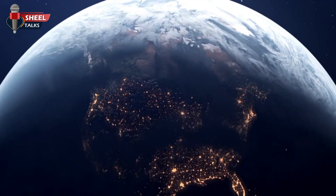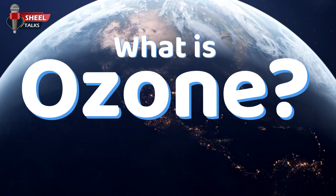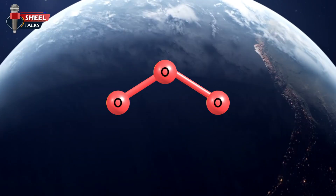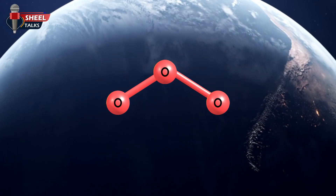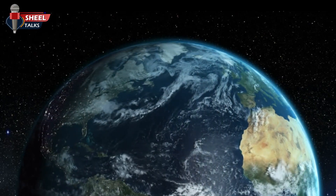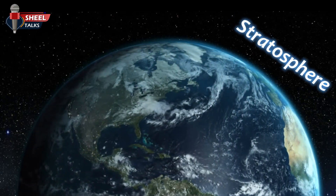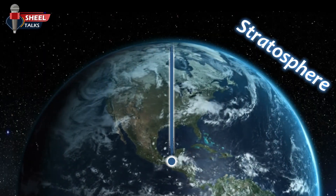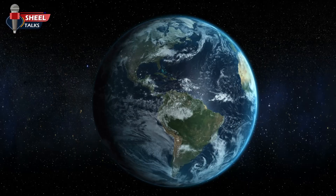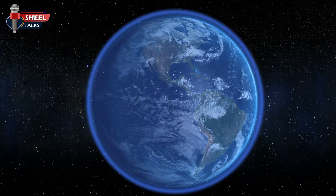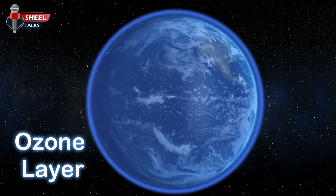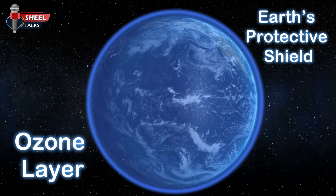First, let us talk about what ozone actually is. Ozone is a gas made up of 3 atoms of oxygen, and its chemical formula is O3. This gas is found in the stratosphere of the earth's atmosphere, which is located about 10 to 50 kilometers above the earth's surface. Ozone forms a protective layer around the earth, which is why it is called the ozone layer, or the earth's protective shield.